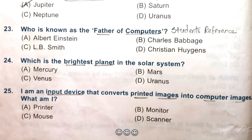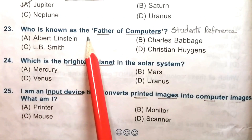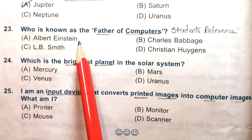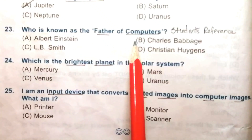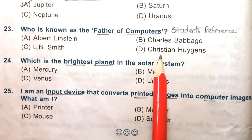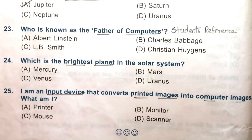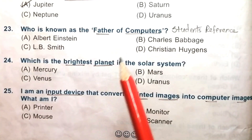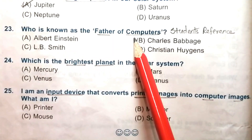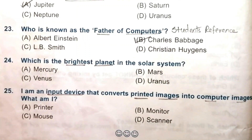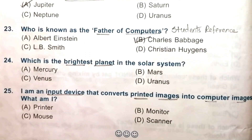Question 23: Who is known as the father of computers? Albert Einstein, Charles Babbage, L.B. Smith, or Christian Huygens. The answer is B, Charles Babbage.